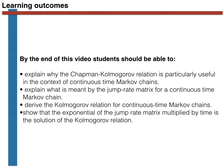I want you to be able to explain what is meant by the jump rate matrix for a continuous-time Markov chain. I want you to be able to derive the Kolmogorov relationship for continuous-time Markov chains, and I want you to show that the exponential of the jump rate matrix multiplied by time is the solution of the Kolmogorov relation.